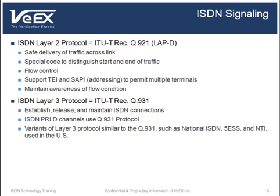ISDN BRI and PRI D-channels both use Q931 protocol. There are several Layer 3 protocol variants that meet certain specific needs. National ISDN, which was initially defined by BELCORE, 5ESS, which was defined by AT&T, and NORTEL's DMS are the three Layer 3 protocols used in the United States.